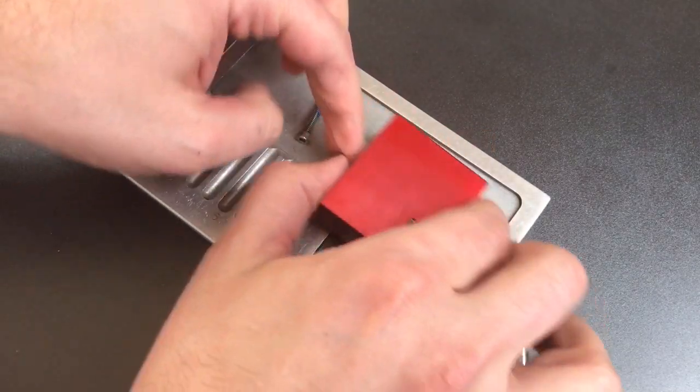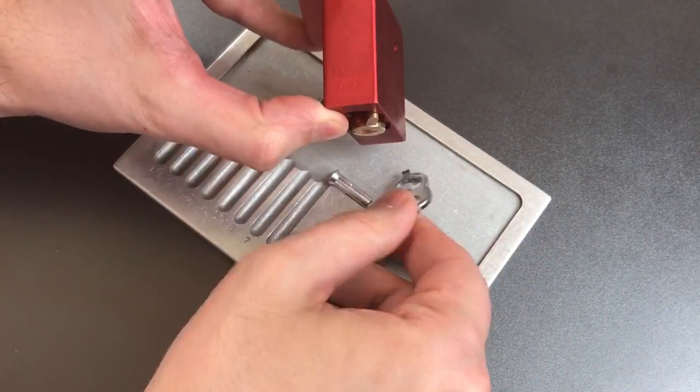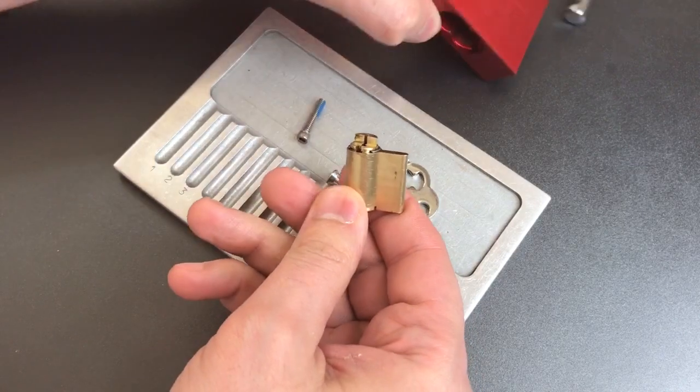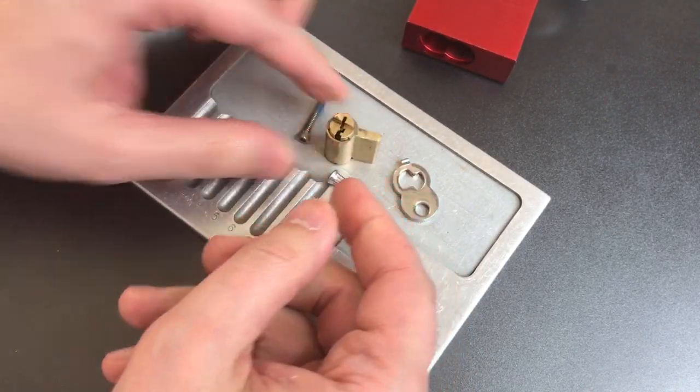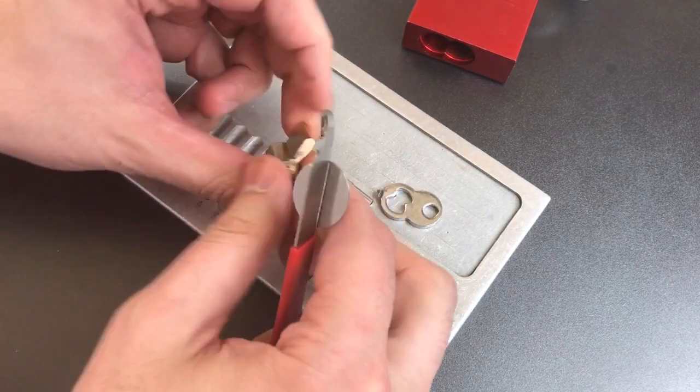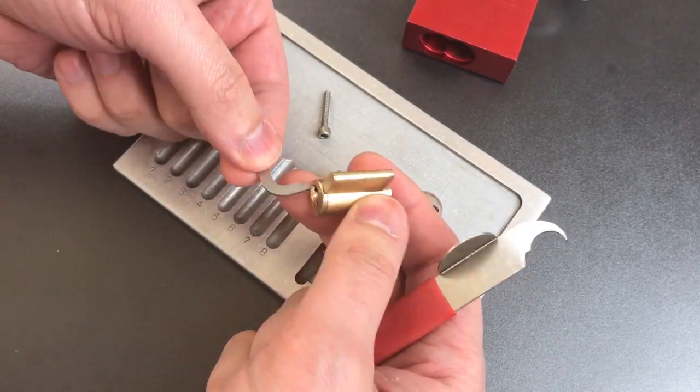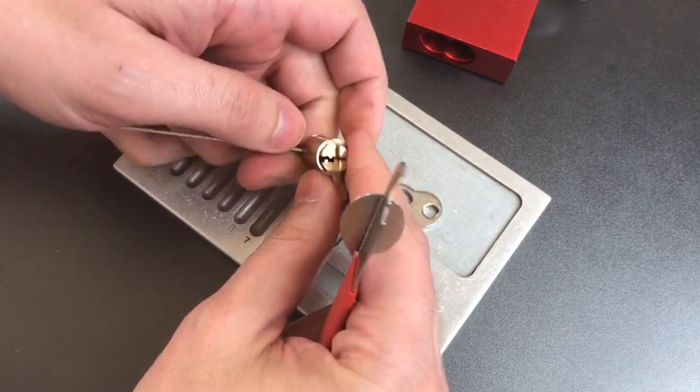This comes apart with an Allen screw right down the shackle hole. Once we get that out, the security nut will come out, then the retainer plate, and the core. We'll need a clip remover to get this clip off the back. And I'm actually going to put something in the keyway here so I don't accidentally lock this while removing the clip.